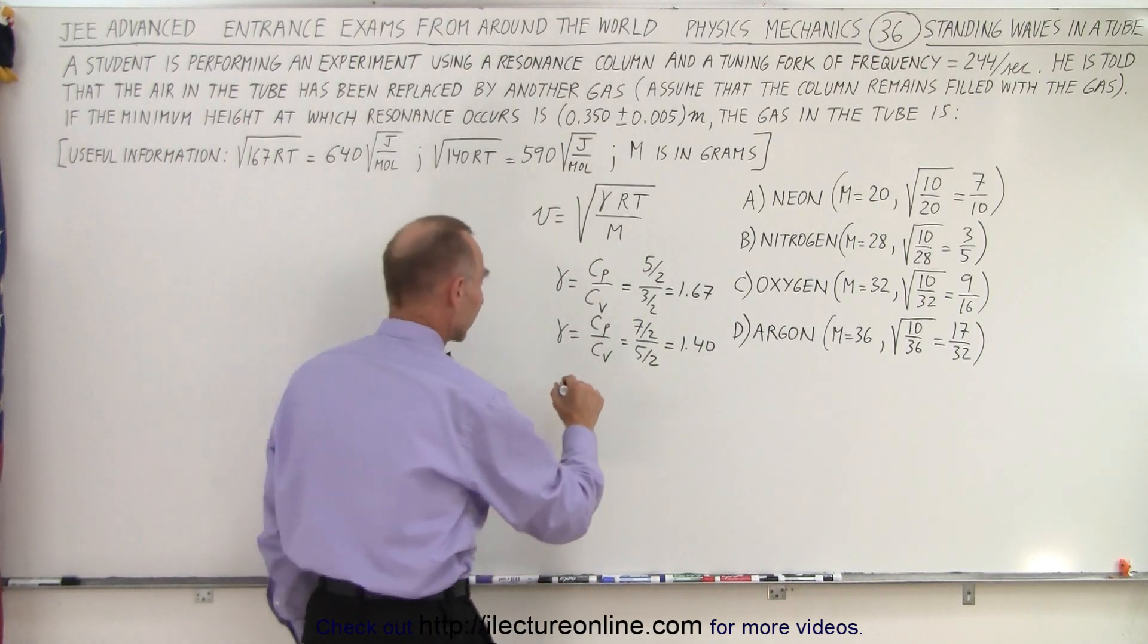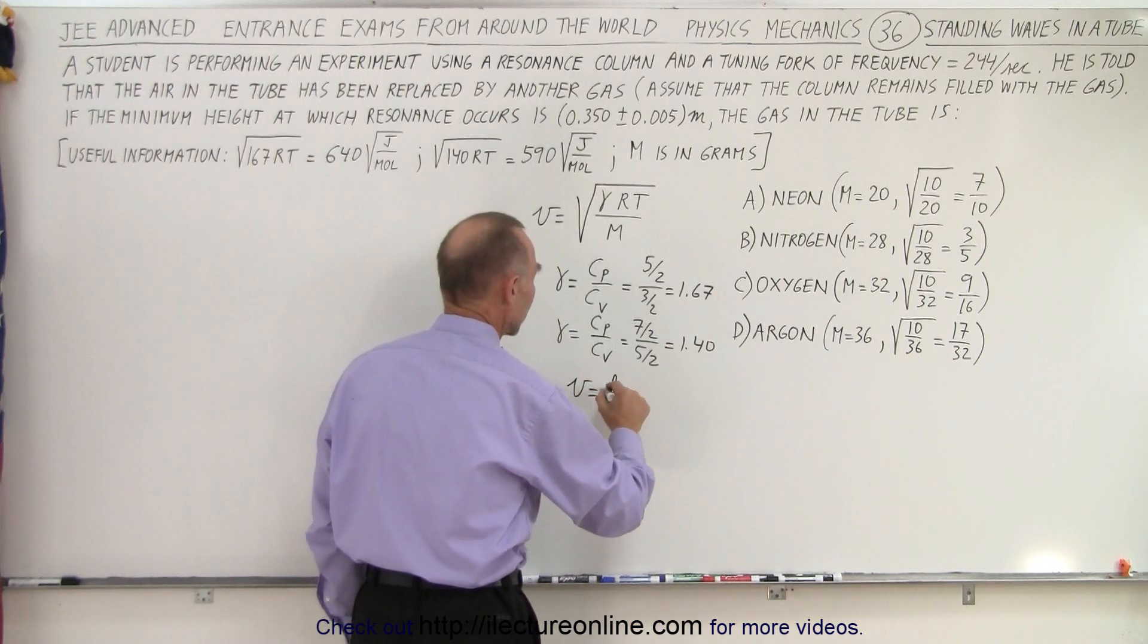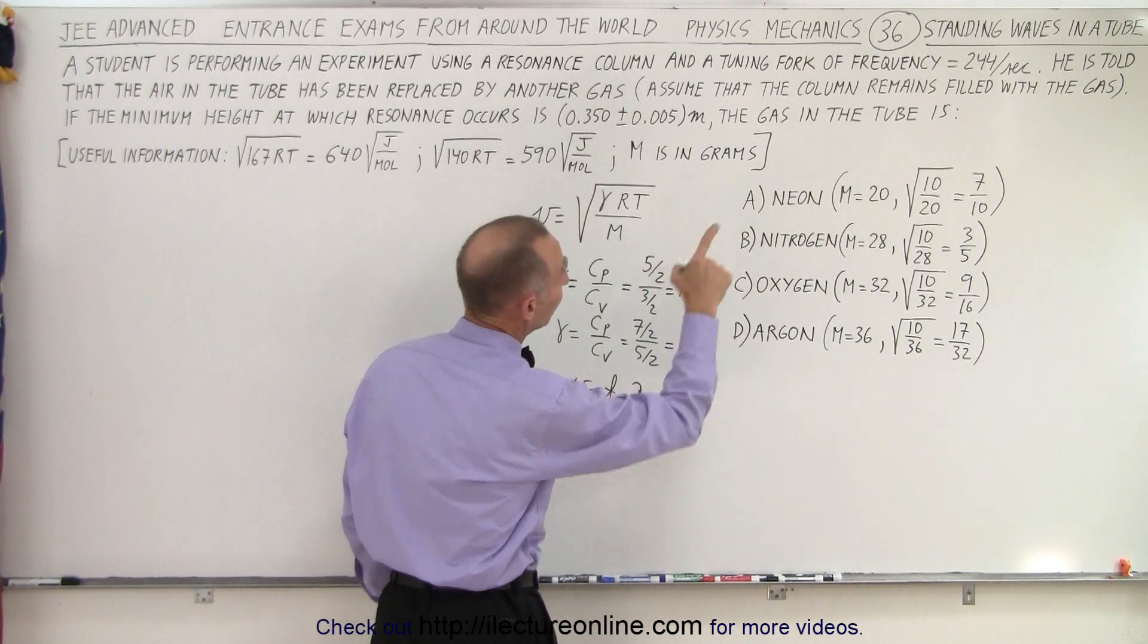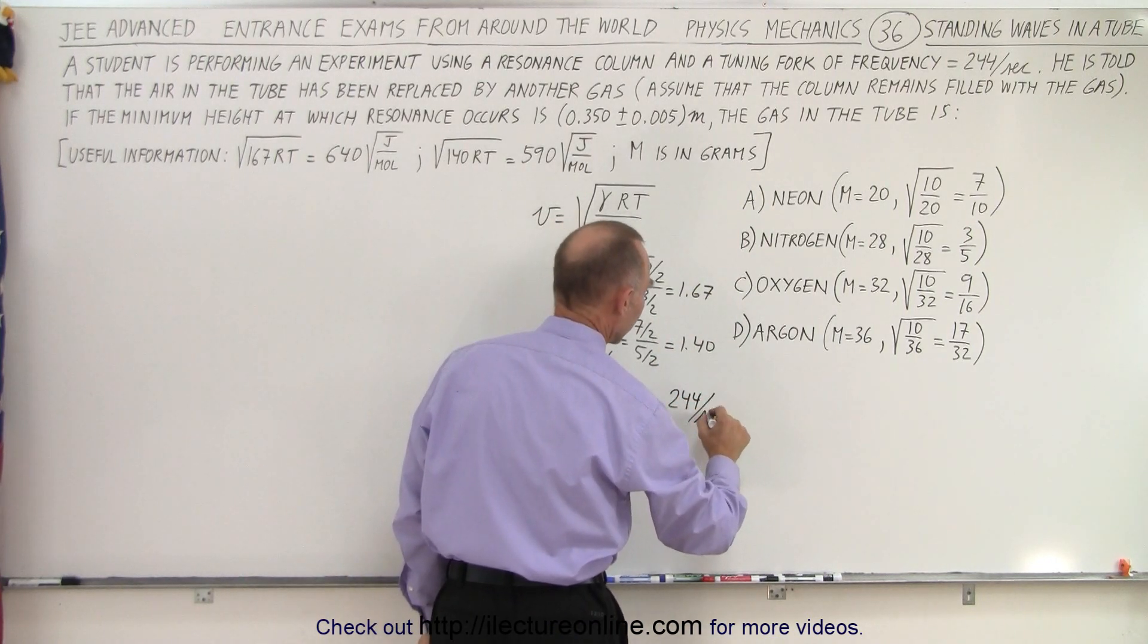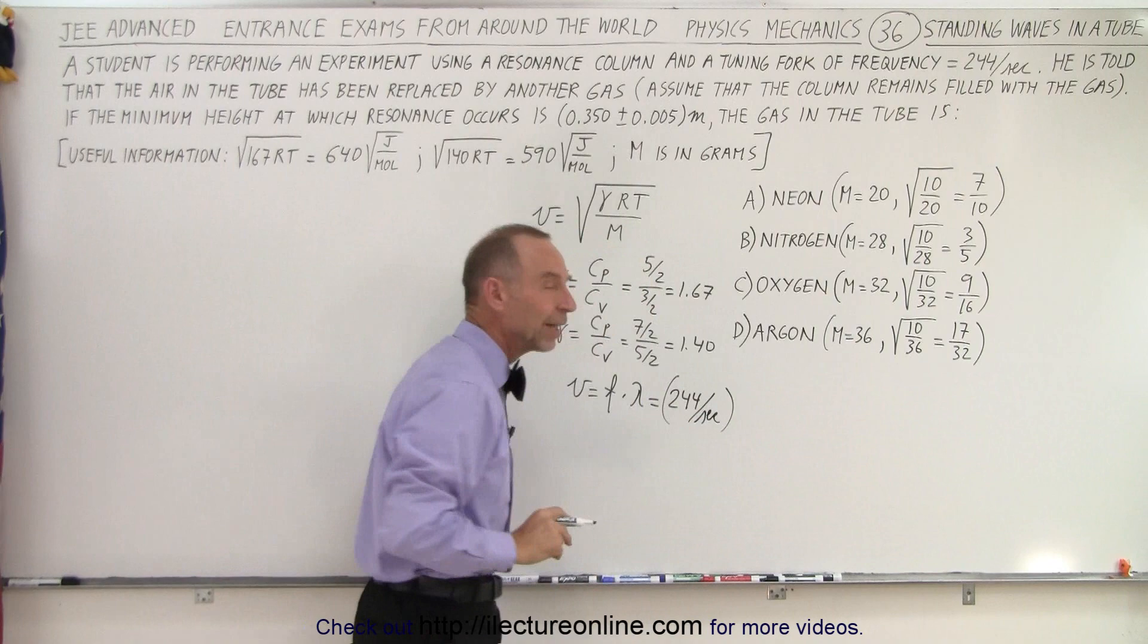The second thing we should realize is that the velocity is equal to the frequency times the wavelength. In this case, the frequency is given to us as 244 per second. But what about the wavelength?